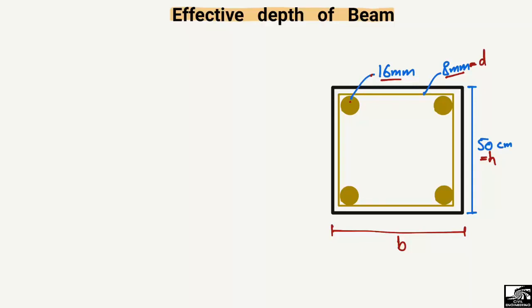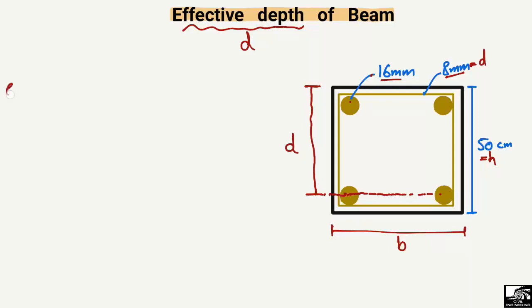Now, how can we find the effective depth for this cross-section? Effective depth is basically the distance from the extreme fiber of the beam cross-section to the mid of the reinforcement. So it is the distance from this extreme fiber of the section down to the mid of the main reinforcement bar. This distance is known as effective depth and is represented by D.